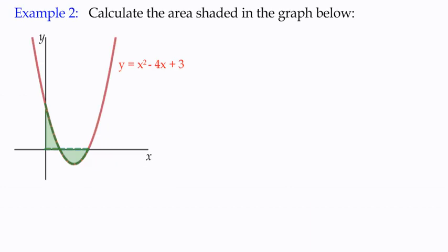Here's a wee example. Calculate the shaded area. We've got a parabola quadratic function, and we're looking for the area between clearly x equals zero and some other value here. We don't know the x-intercepts or the roots.